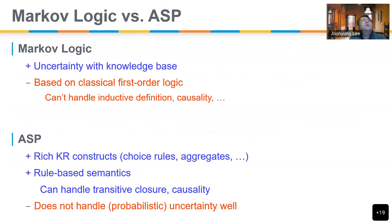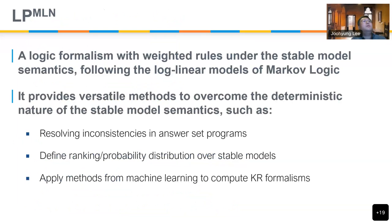Markov logic is good for handling uncertainty in a knowledge base. The defect is that it's based on classical first-order logic, and because of that, certain limitations exist. First-order logic cannot express certain concepts like inductive definitions, cardinality, aggregates, and similar things. ASP is a way to overcome these limitations — people invented many rich knowledge representation constructs with rule-based semantics, including transitive closure, reachability, and equivalency. On the other hand, ASP doesn't handle probability and uncertainty well. That is actually the idea behind LPMLN.